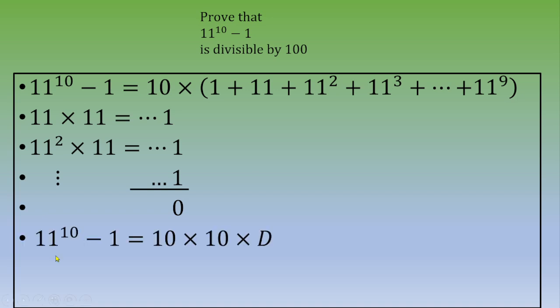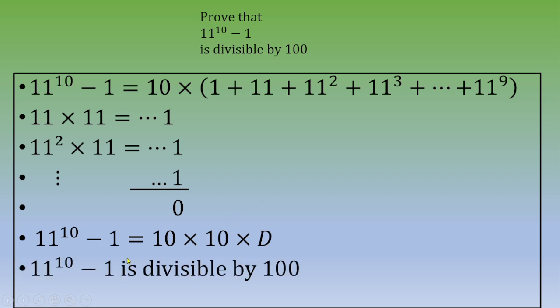To recap: 11 to the power of 10 minus 1 equals 10 times 10 times some integer D. This proves that 11 to the power of 10 minus 1 is divisible by 10 times 10, which is 100. Thank you for watching this video, and I hope to see you in the next one.